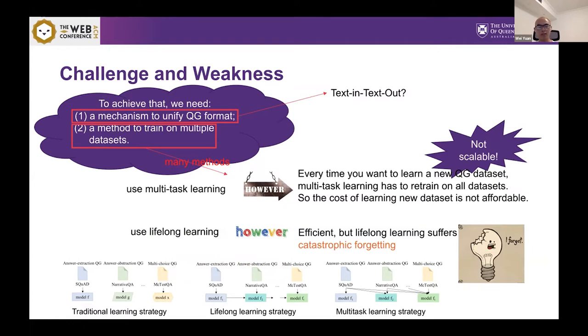If you want to use lifelong learning, you have to address catastrophic forgetting. Here we decide to use lifelong learning because lifelong learning can keep models generalization ability even if they are trained.